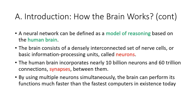Before we delve into ANN, let's talk about the inspiration of this model — the human brain. A neural network can be defined as a model of reasoning based on the human brain. The biological brain consists of densely interconnected sets of nerve cells, the basic information processing unit called neurons. The human brain incorporates nearly 10 billion neurons and 60 trillion connections or synapses between them.